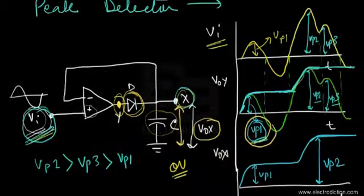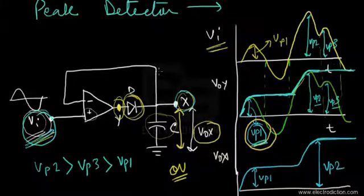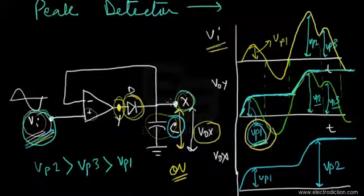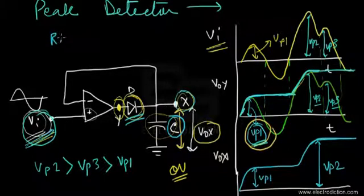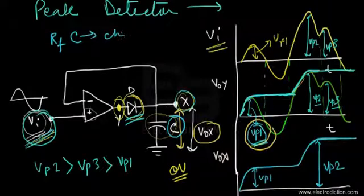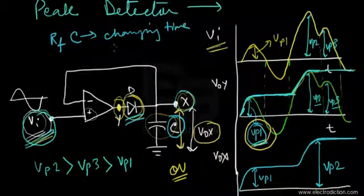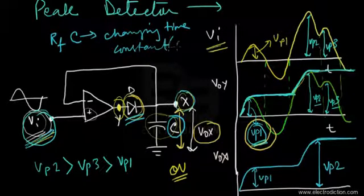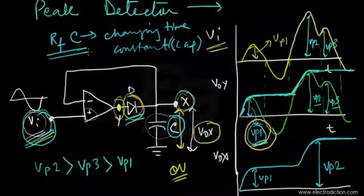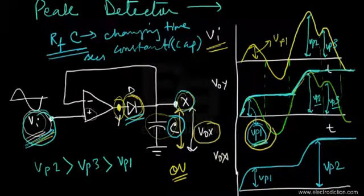The capacitor, in order to charge, requires a certain charging time constant given by multiplying the capacitance C by the forward resistance of diode D — RF. So the charging time constant is RF times C. The capacitor takes RF·C seconds to charge itself to the highest peak VP2 whenever it encounters that highest peak.